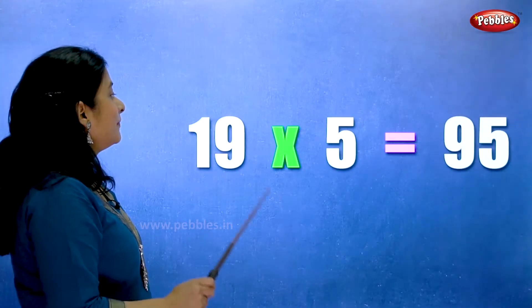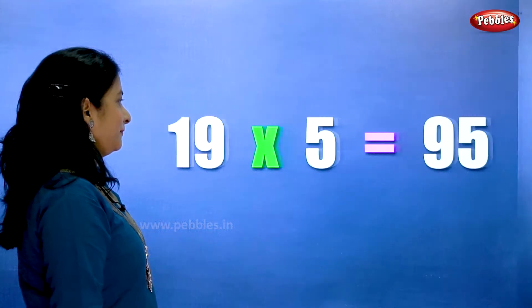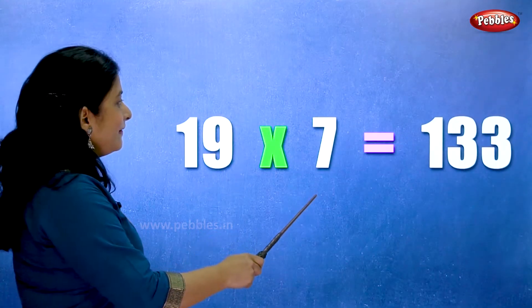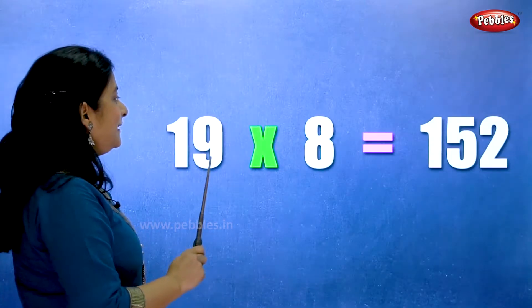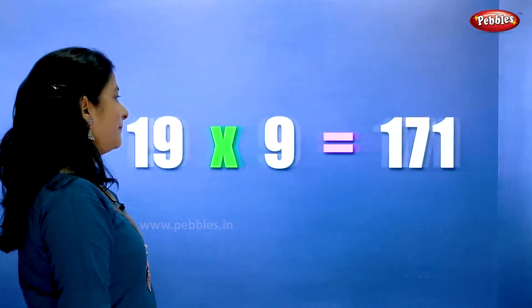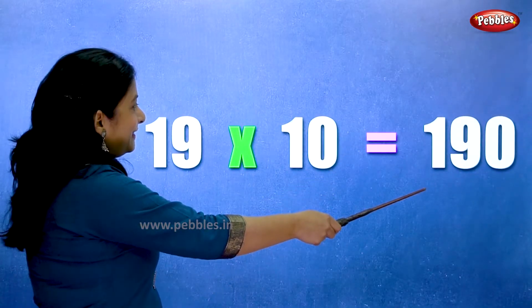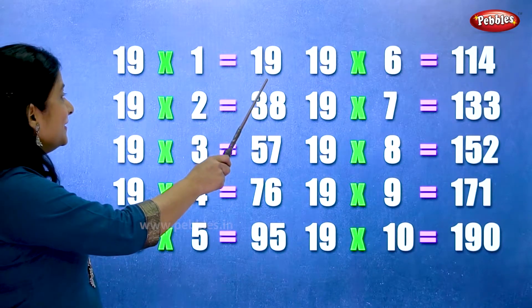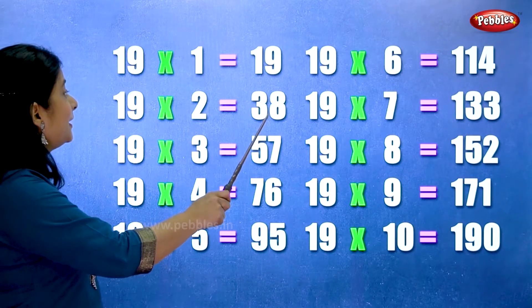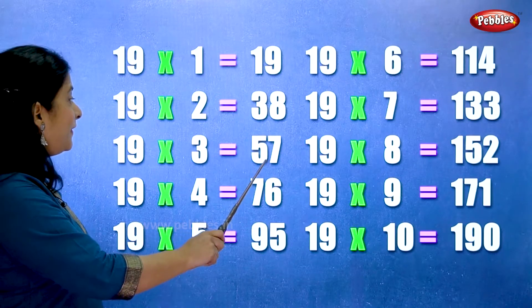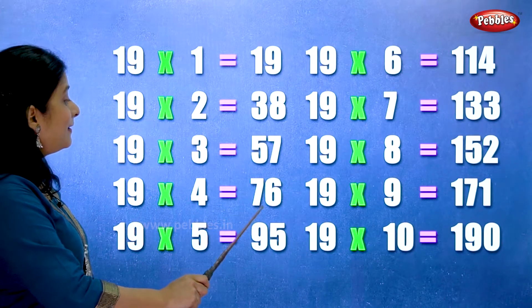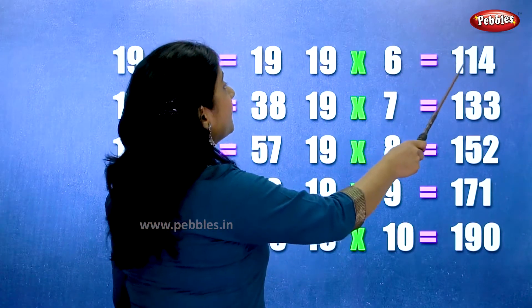19 ones are 19. 19 twos are 38. 19 threes are 57. 19 fours are 76. 19 fives are 95. 19 sixes are 114. 19 sevens are 133. 19 eights are 152. 19 nines are 171. 19 tens are 190. Let's learn the table of 19 one more time. 19 ones are 19. 19 twos are 38. 19 threes are 57. 19 fours are 76. 19 fives are 95. 19 sixes are 114.